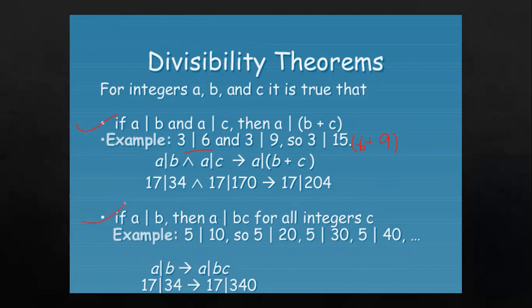The second theorem is: if a divides b, then a divides b times c for all integers c. That means if b is divisible by a, then any multiple of b will also be divisible by a. For example, if a divides 10, then multiplying by c equals 2 gives 20, multiplying by c equals 3 gives 30, and multiplying by c equals 4 gives 40. So a divides b implies a divides bc.